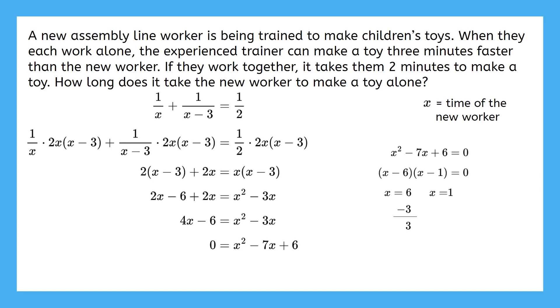Let's check the time for the experienced employee if the new employee takes one minute to make the toy. If we subtract three from it this time, we would get that the experienced employee takes negative two minutes to make a toy, a negative time which doesn't make sense so we can eliminate this answer.